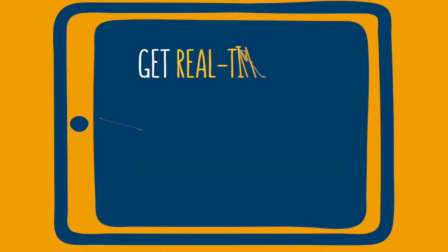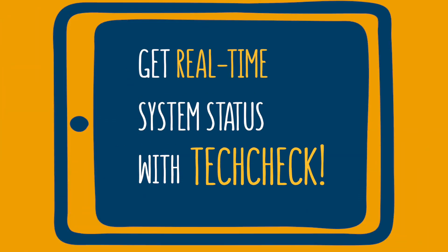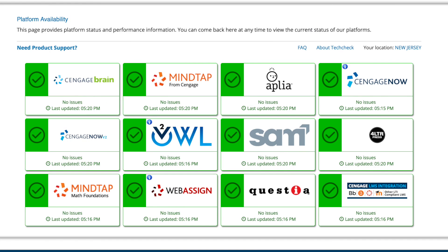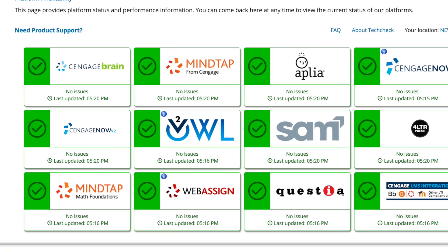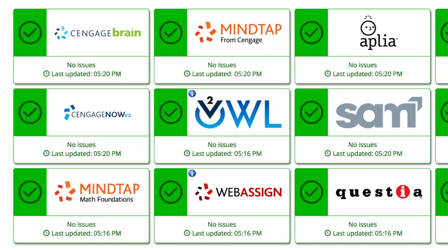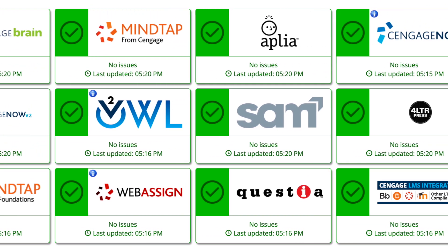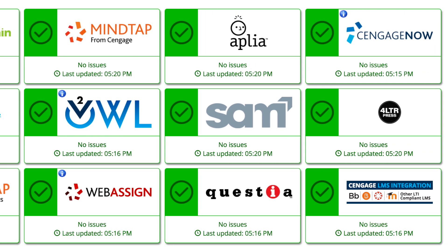Get real-time system status with TechCheck. TechCheck.cengage.com provides immediate insight into system performance, so you can quickly see if Cengage is experiencing technical difficulties.